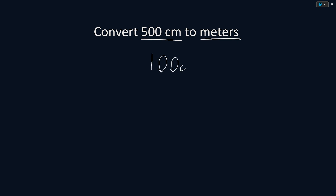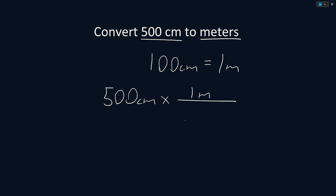Convert 500 centimeters to meters. We know that there are 100 centimeters in 1 meter. So to convert our units, we start with the units that we were given of 500 centimeters and multiply by a fraction that cancels out our units. We will put meters on top and centimeters on the bottom. Solving this equation, we get that 500 centimeters is equal to 5 meters.